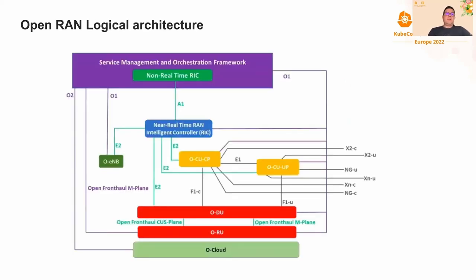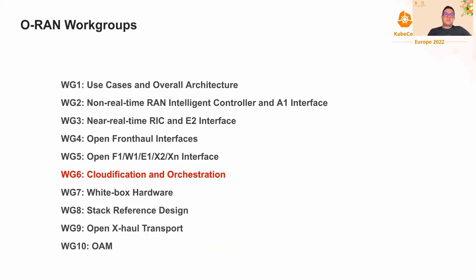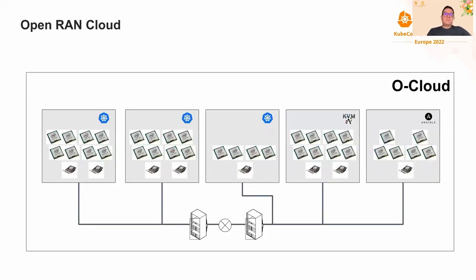The OpenRAN Alliance defined the standardized logical architecture of the radio access network and the interfaces between its components. It also defines various splits, or functionality distributions, across physical and cloud instances. To facilitate this design, the OpenRAN Alliance defines 10 workgroups. Most important here is Workgroup 6 — cloudification and orchestration. This workgroup drives the decoupling of RAN software from the underlying hardware platforms and produces technology and reference designs that allow commodity hardware platforms to be leveraged for all parts of the radio access network deployment. Sounds familiar, right?